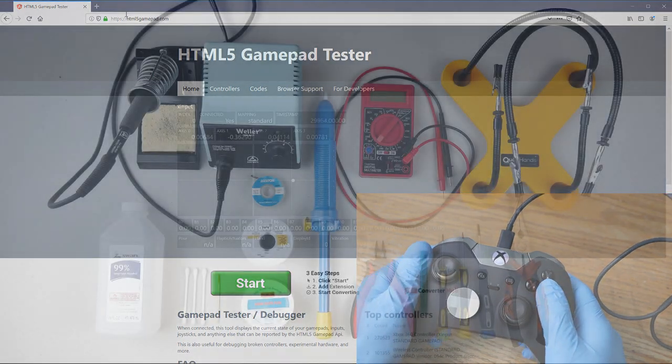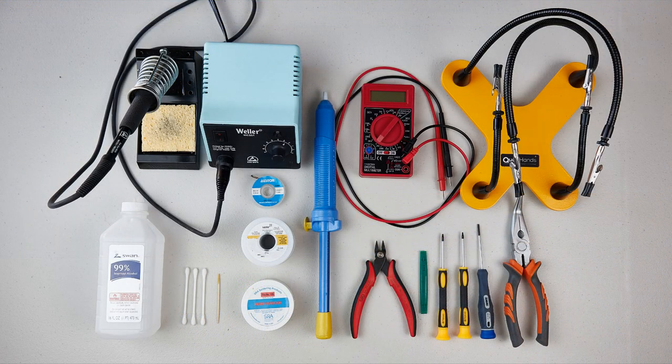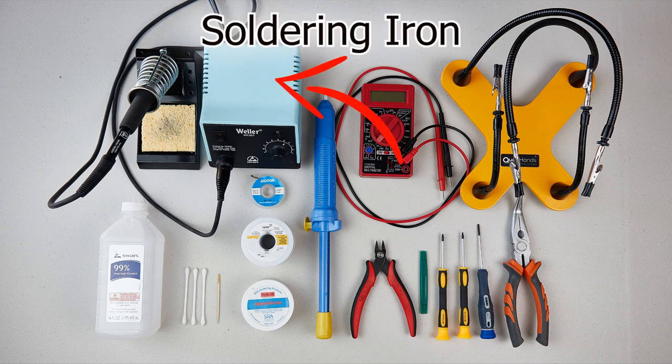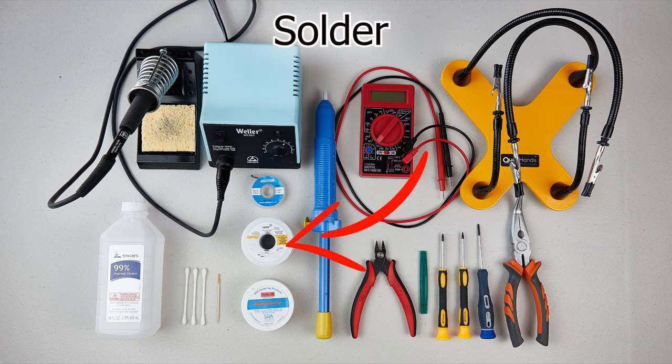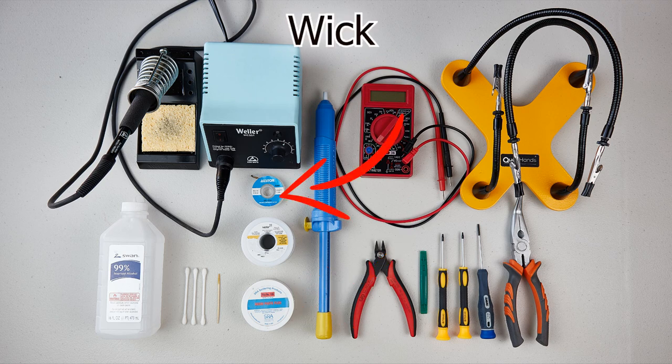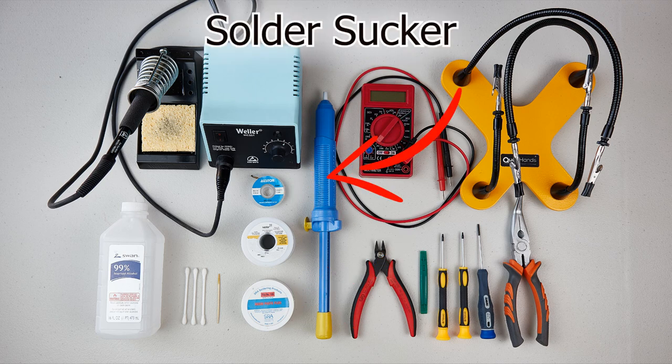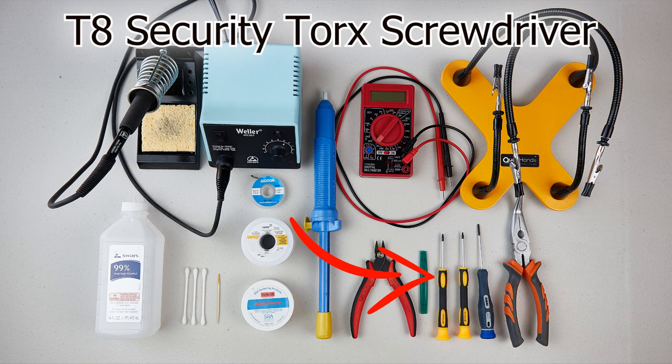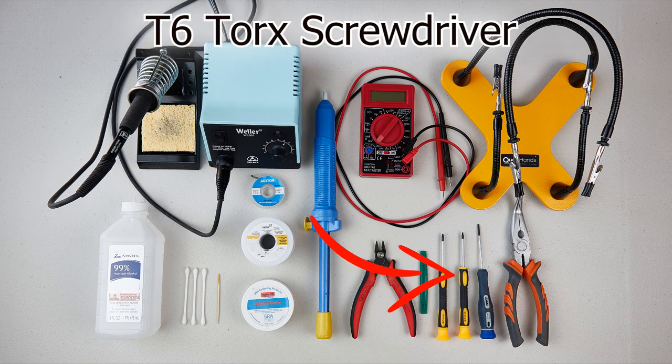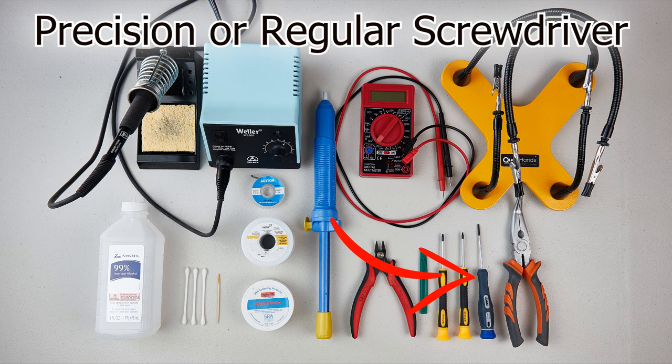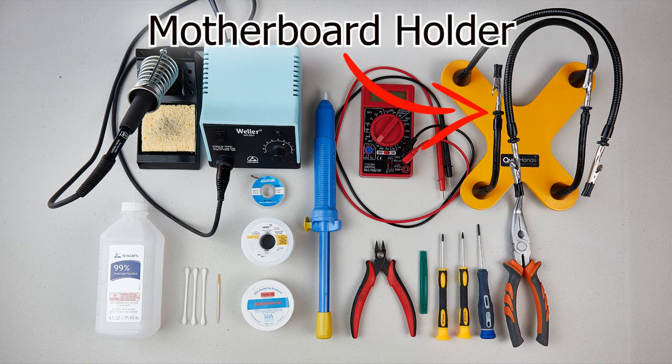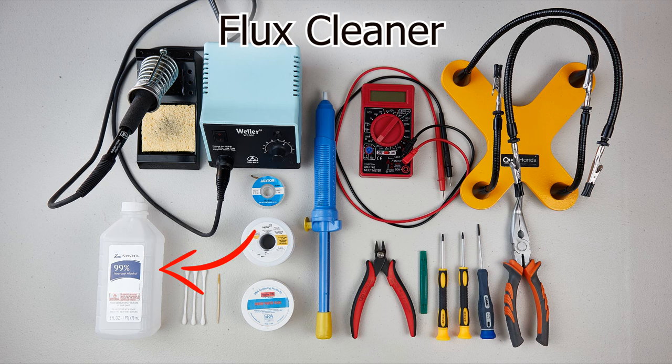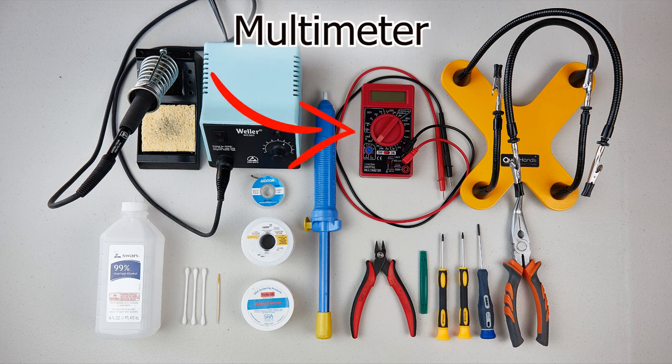Now before we start the repair, let's go over some of the tools that we'll need. We'll need a soldering iron, solder, flux, a wick, a solder sucker, cutting pliers, a plastic controller grip prying tool, a T8 security Torx screwdriver, a T6 Torx screwdriver, a precision or regular screwdriver, regular pliers, something to hold the motherboard, something to clean the flux, and one of the most important tools, a multimeter that can measure resistance.